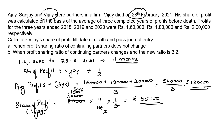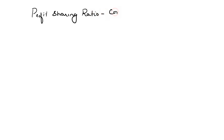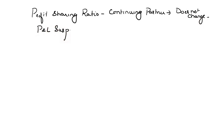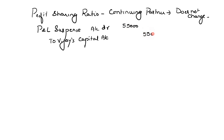Once we have the profit share, we pass the entries. The first case is where the profit sharing ratio of continuing partners does not change. For this case, we simply debit the profit and loss suspense account and credit deceased partner Vijay's capital account with his share of profit of ₹55,000. As simple as that.